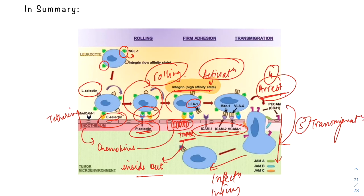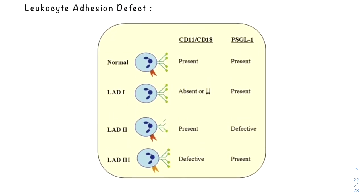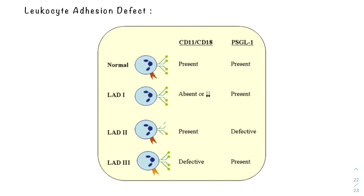Before ending, let me introduce the primary immunodeficiency disorder — leukocyte adhesion deficiency (LAD) — in which the main defect lies in defective leukocyte adhesion. In LAD, leukocytes cannot migrate to the site of infection, cannot kill microorganisms, thus causing severe bacterial infections and lack of inflammation.